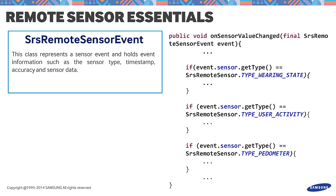The values array depends on which sensor type is being monitored. Type UserActivity provides three values: UnknownState, Walk, and Run. Type Pedometer gives us the value of the StepCounter — this event is updated every five minutes to reduce the power consumption of the wearable device. Type WearingState gives us two values: NotWearing and Wearing.